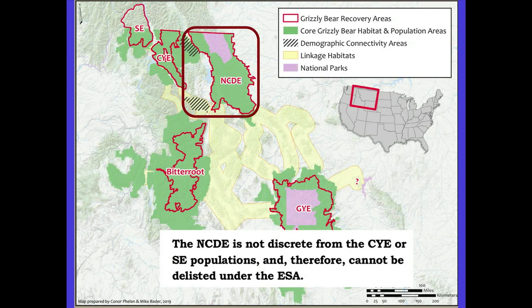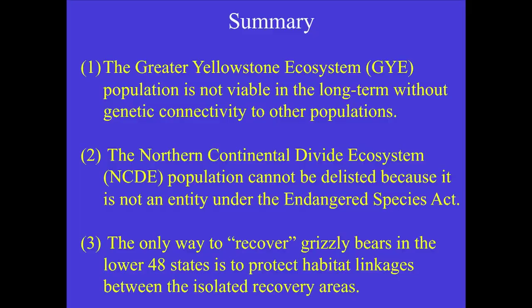Under the provisions of the rule interpreting distinct population segments, I would argue the NCDE is not discrete from the Cabinet-Yaak ecosystem or the Selkirk ecosystem populations, and therefore the NCDE by itself is not eligible to be delisted under the ESA. It can only be considered under the ESA by including the NCDE, the Cabinet-Yaak, and the Selkirks together. In summary: the greater Yellowstone ecosystem population is not viable in the long term without connecting it to other populations, and the only way to recover grizzly populations meaningfully is to protect habitat linkages between all the different recovery areas.